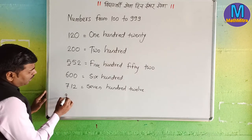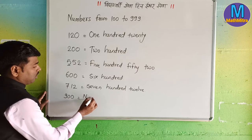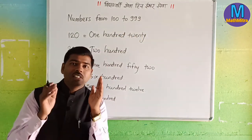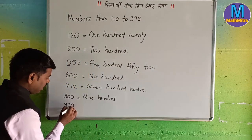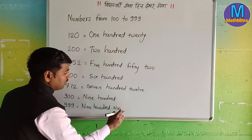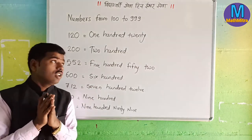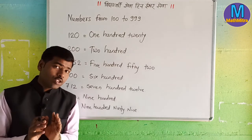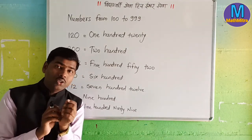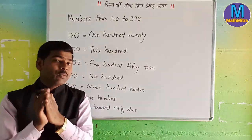Nine zero zero — nine hundred. And now the three digits biggest three-digit number: nine hundred ninety-nine.